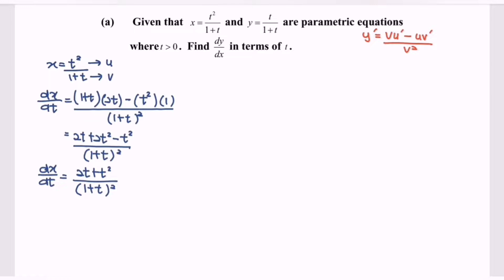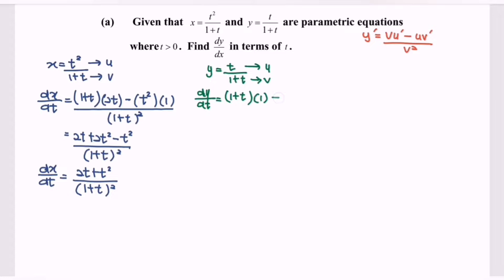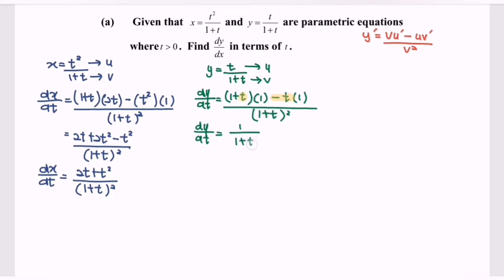Next, move on to y, where y equals t over 1 plus t. Name t as u and 1 plus t as v. Differentiating y with respect to t: dy/dt equals (1 plus t) times 1 minus t times 1, over (1 plus t) squared. Simplifying, dy/dt equals 1 over (1 plus t) squared.